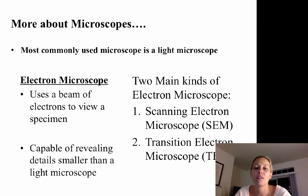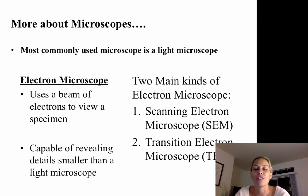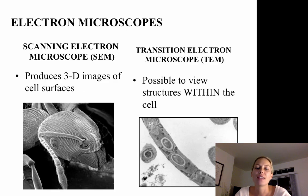The most commonly used microscope is a light microscope, which is the compound microscope we're using in class. However, there are other types. The electron microscope uses a beam of electrons to view a specimen and is capable of revealing details smaller than a light microscope can. Scientists use one of two main kinds: a scanning electron microscope (SEM) or a transmission electron microscope (TEM). A scanning electron microscope is used to produce 3D images of the surface of cells or objects.